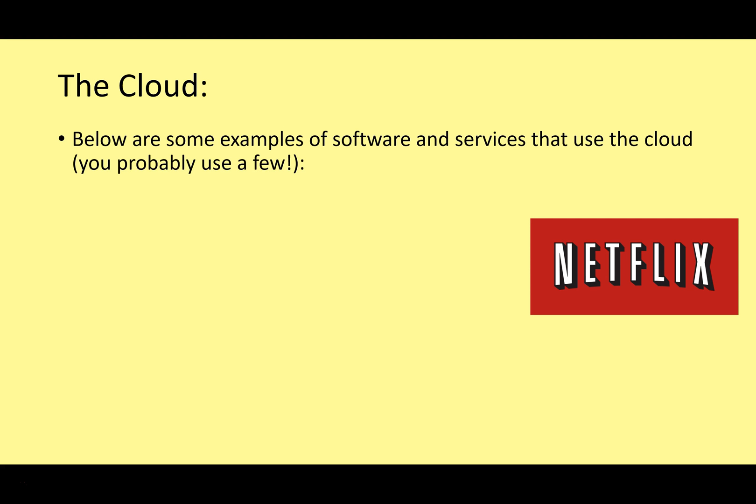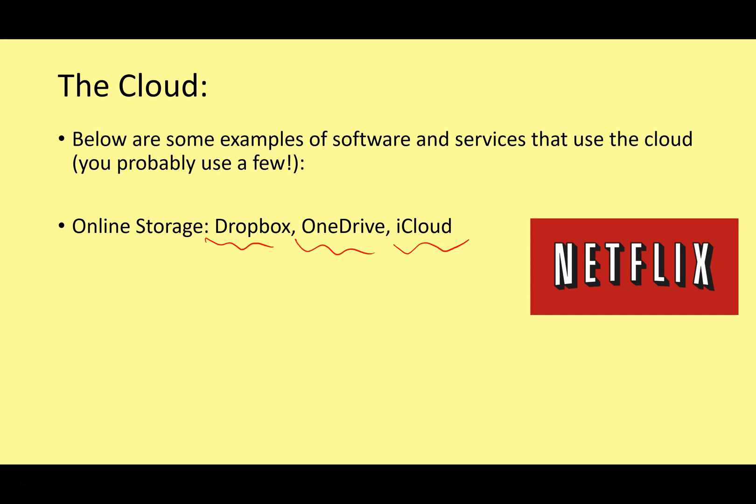Here are some examples of software and services that use cloud computing. Online storage: you can save all your documents on Dropbox, OneDrive, iCloud, and similar services — this was the main use of cloud computing for regular people a few years ago, allowing access to documents from any internet-connected computer. Nowadays we also use a lot of software online, such as Google Docs or Office 365 — word processors and spreadsheets that are not installed on your computer, but located on a web server and accessed through your web browser.